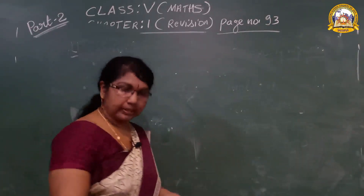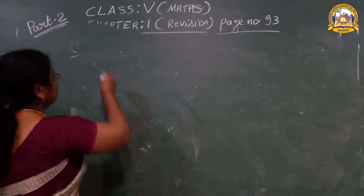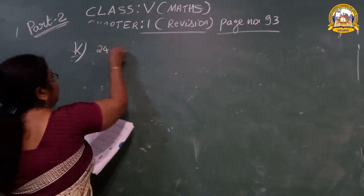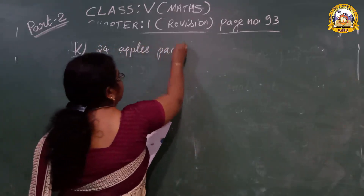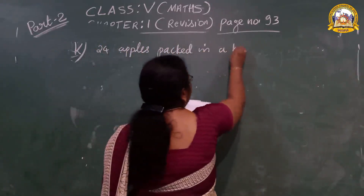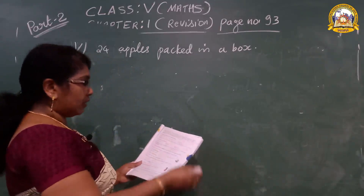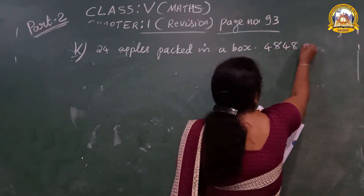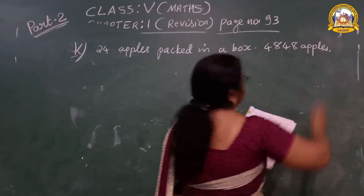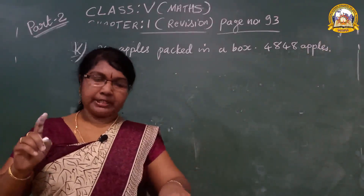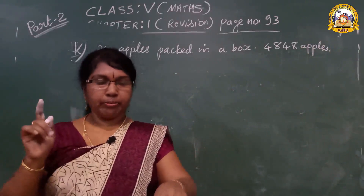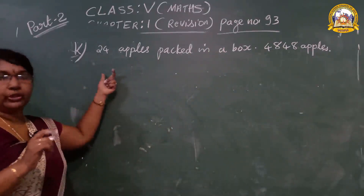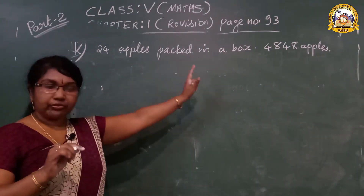Now look at the next question, question number K. Twenty-four apples are packed in a box. How many boxes will be needed to pack 4,848 apples? Read the question again: twenty-four apples packed in one box; how many boxes are needed for 4,848 apples? This is a word sum and you have to write it with steps.